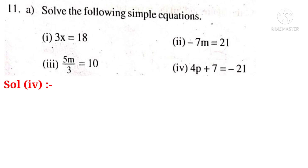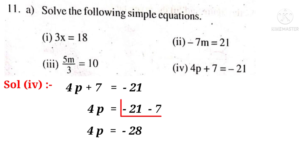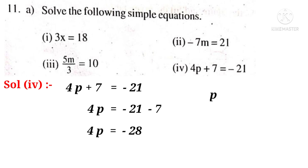Solution 4: 4p plus 7 is equal to minus 21. So, 4p is equal to minus 21 minus 7. Because plus 7 when transposed to the right hand side, it becomes minus 7. 4p is equal to minus 28, because the sum of two negative integers is again a negative integer. So, p is equal to minus 28 by 4. On simplification by 4, 7 times. So, p is equal to minus 7 is the solution.